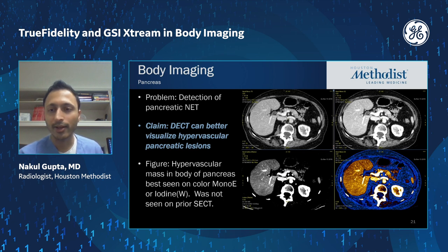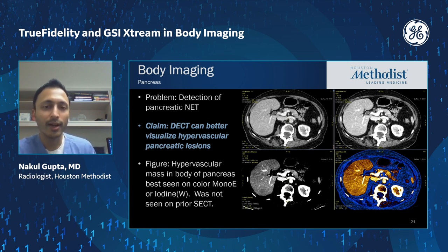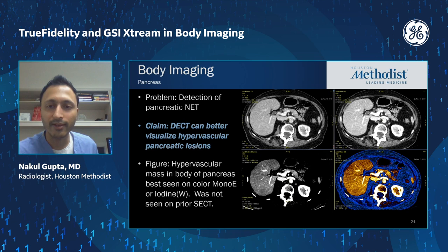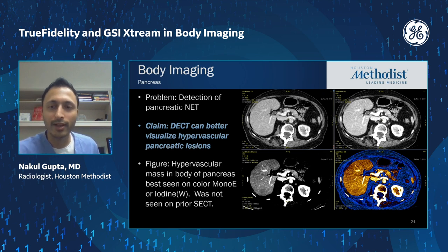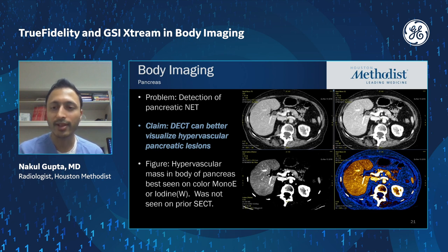Another use case in the pancreas is neuroendocrine tumors or hypervascular pancreatic lesions. This patient had a single energy scan done a few months prior that didn't show any abnormality, but the surgeon was convinced the patient had an insulinoma based on labs and clinical presentation. A follow-up study with dual energy was performed. On the 120 kVp-like image, it's very difficult to appreciate a subtle hypervascular mass in the body of the pancreas, but at 50 keV with the color map and on the iodine map, the hypervascular lesion is much more plainly visualized.